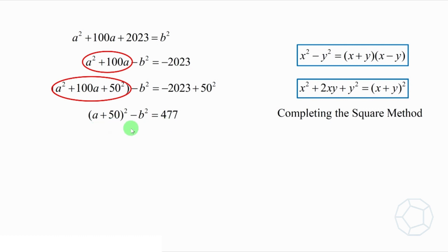Next, we can further factorize it with the first identity to get (a + 50 + b)(a + 50 - b) equals 477. Because a and b are integers, the two bracket terms are also integers. So we are going to list out all the factors of 477.